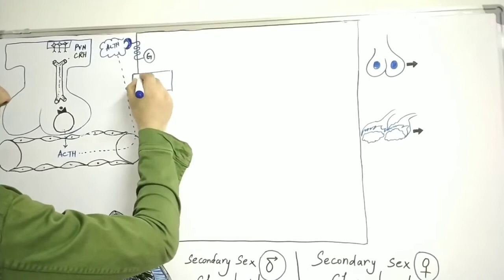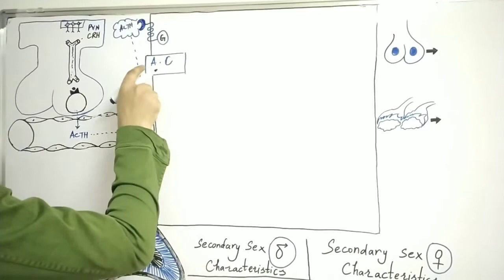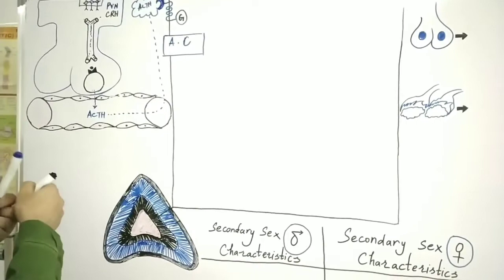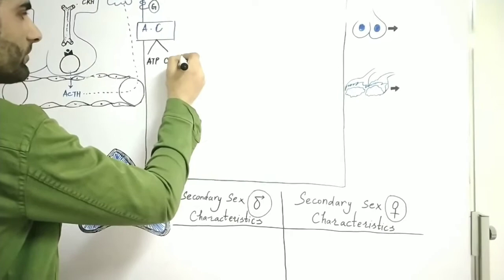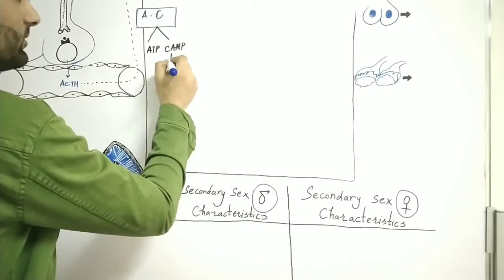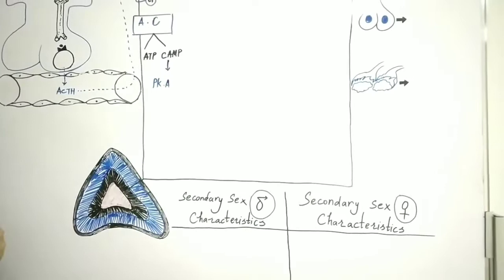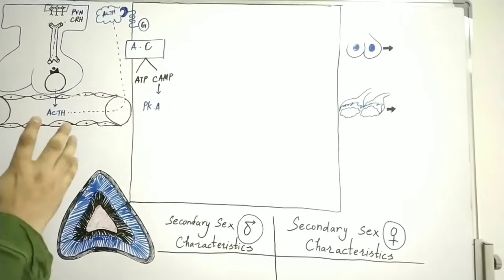The G protein activates another protein known as adenylyl cyclase, which is a membrane protein. When G protein activates adenylyl cyclase, adenylyl cyclase converts ATP into cyclic AMP. This cyclic AMP activates another protein known as protein kinase A.